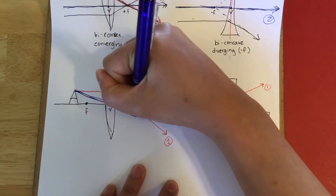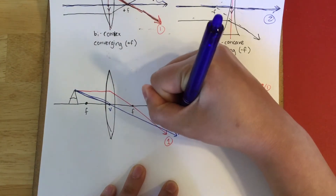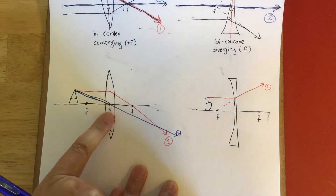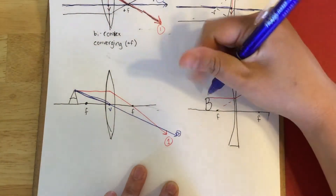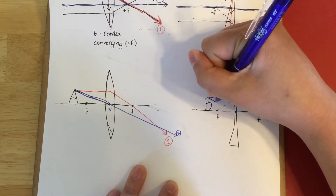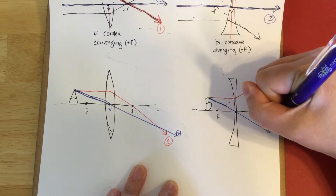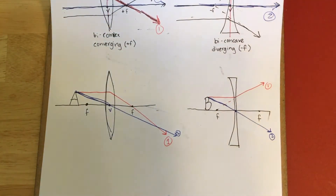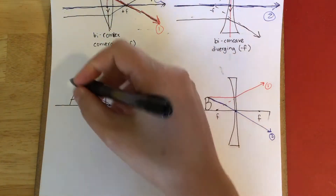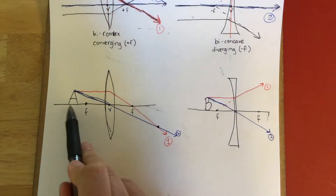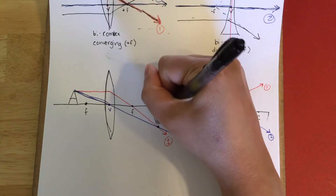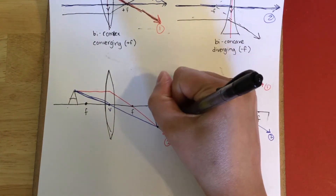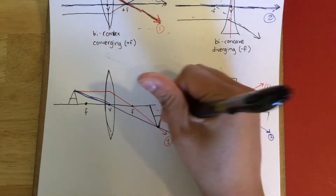When I draw ray number two on an actual ray diagram, it goes from the top of the object through the vertex and just keeps going in a straight line, undeterred. I already have enough information to determine the type of image. Both rays left the top of the letter, so the top of the object is found at the intersection of these rays, while the base stays on the principal axis.